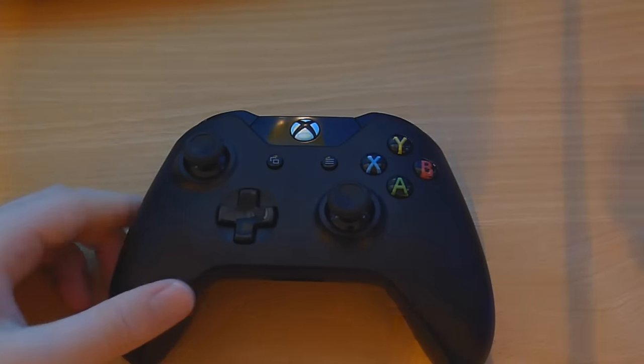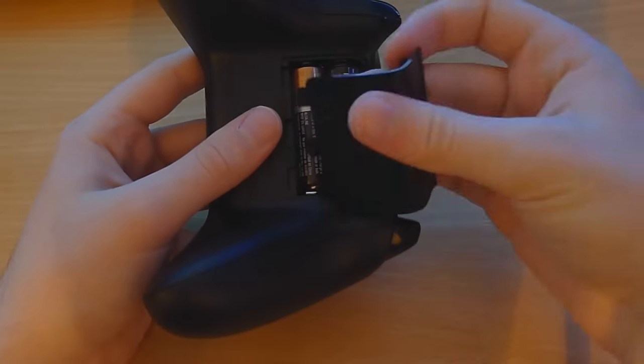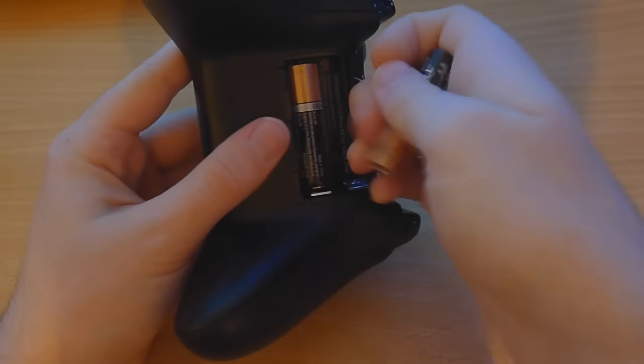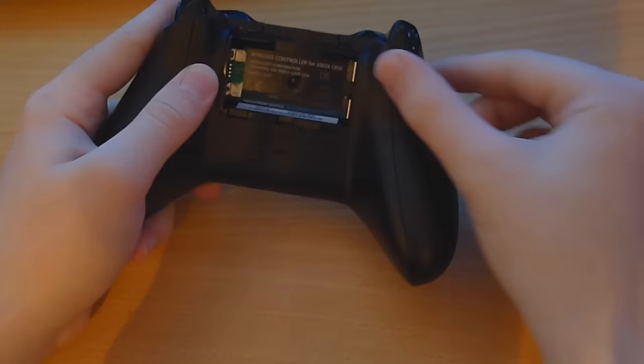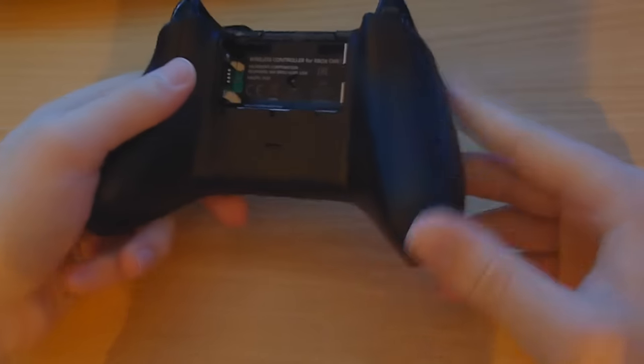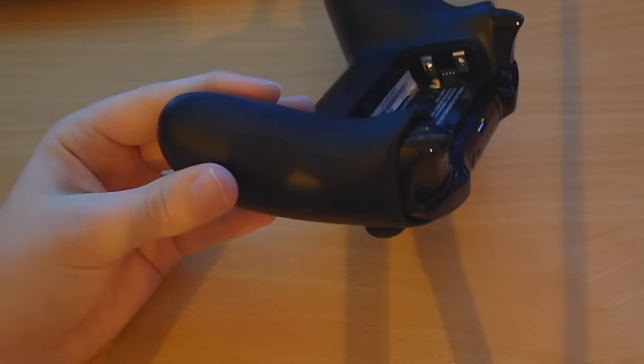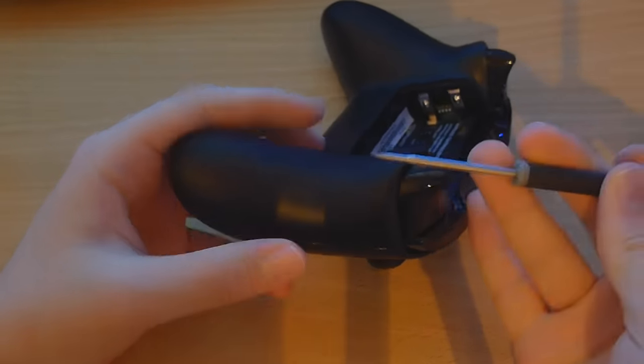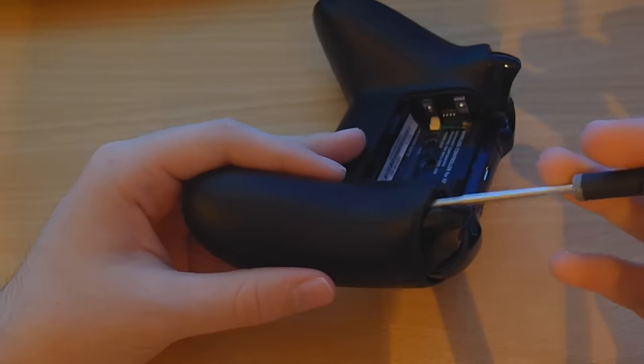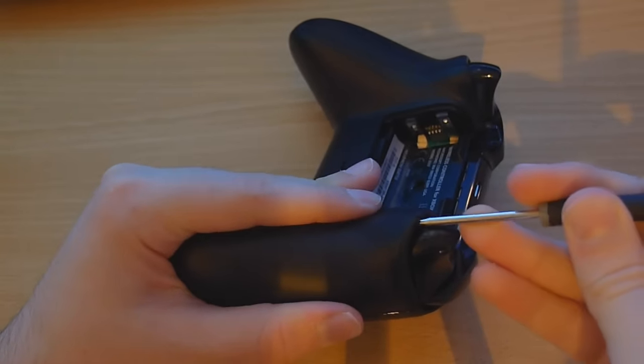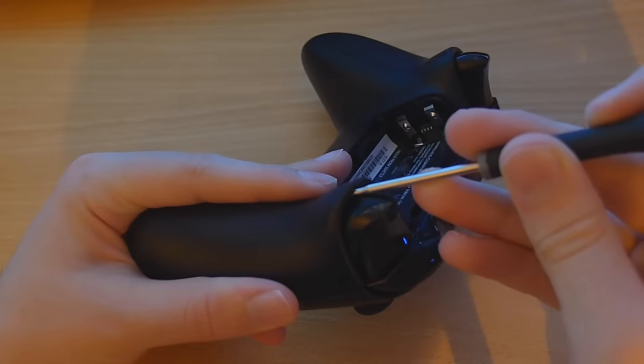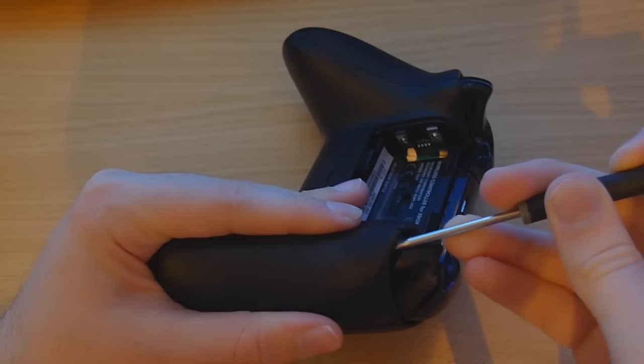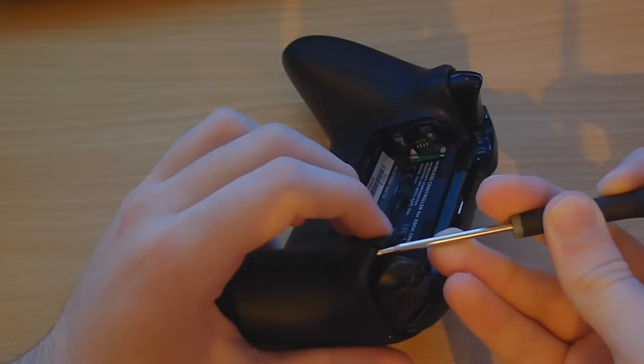So first things first, we've got to get this controller opened up. First thing, take out the back plate, take out the batteries, and then we've got to take these little panels off. The screws are underneath the panels. So what we're going to have to do first of all is grab a screwdriver, preferably a flathead screwdriver or maybe a butter knife. Stick it down here and then lift it up. You hear the click sound, that's the clip coming off at the top.